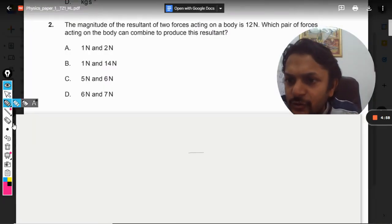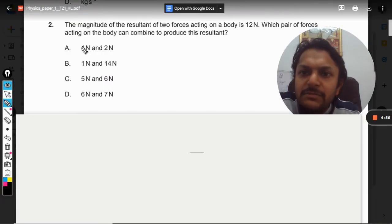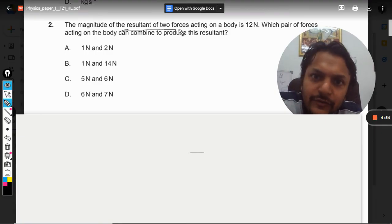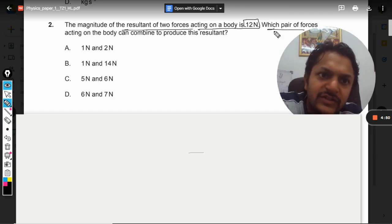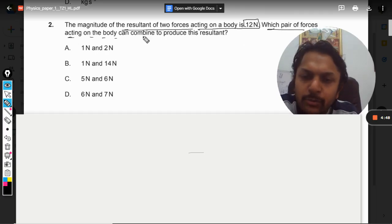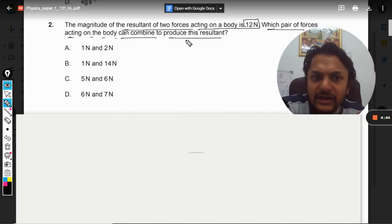Okay, so what is there in this question? Let us see. The magnitude of the resultant of two forces acting on a body is 12 Newton. Which pair of forces acting on the body can combine to produce this resultant?